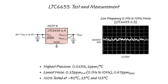With 0.025% accuracy, 2 ppm per degree C drift, and the lowest noise of any reference IC, the LTC6655 delivers performance and flexibility.